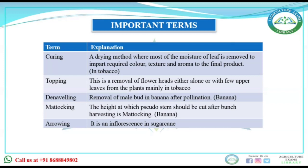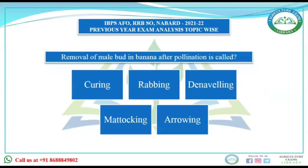Arrowing is the inflorescence in sugarcane. Rabbing is a process by which burning of the thrashes, weeds, or organic residues left on the soil surface is done. In rabbing, a 15 to 20 centimeter thick layer of leaves, weeds, or paddy straw is uniformly spread over the soil and then burned, so that weeds and unwanted material are removed.